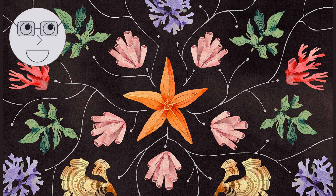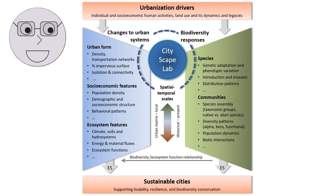Each type of biodiversity is interconnected and relies on the others for its survival. For example, genetic diversity is necessary for species diversity, and species diversity is necessary for ecosystem diversity. The visuals show how the different types of biodiversity are interconnected, such as how genetic diversity leads to species diversity, which in turn leads to ecosystem diversity.